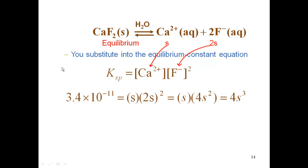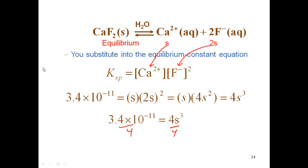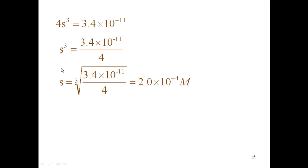Now I want to solve for S, so I need to get S by itself. We take 3.4×10⁻¹¹ equals 4S³ and divide by 4 on both sides, which gets us S³ equals 3.4×10⁻¹¹ divided by 4. Then I take the cube root of both sides, which gives me S equals the cube root of (3.4×10⁻¹¹ / 4), which mathematically gives me 2.0×10⁻⁴ molarity.